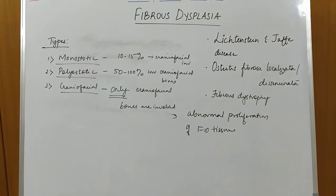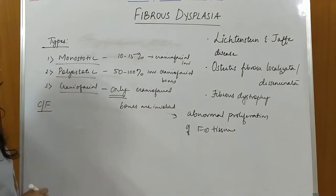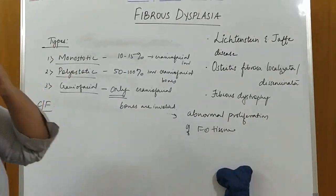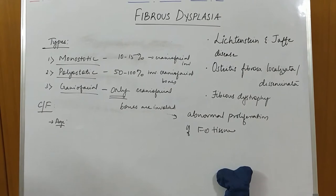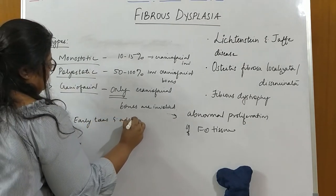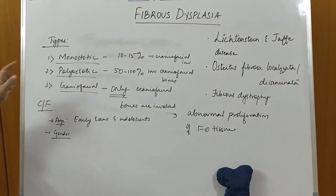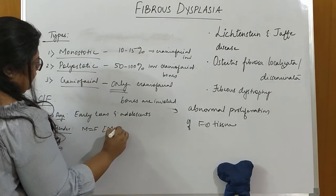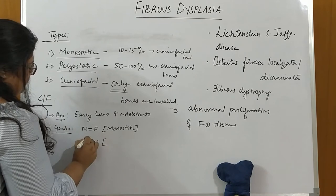Moving on to clinical features. Fibrous Dysplasia is a disease of teens or adolescents — by the time cases are diagnosed, the age is around 20 years. Regarding gender, for monoostotic type there is equal gender predilection — males and females are equally involved. Whereas females are slightly more commonly affected than males in the polyostotic type.